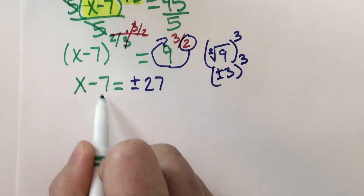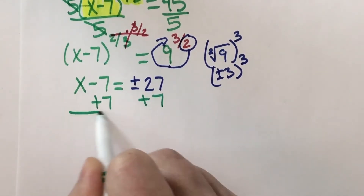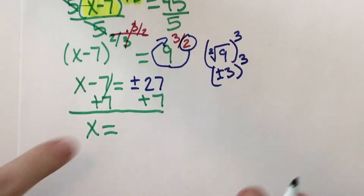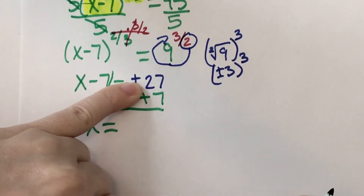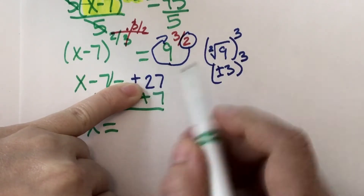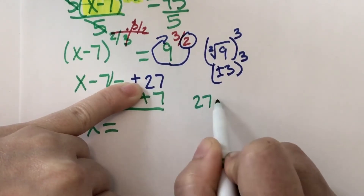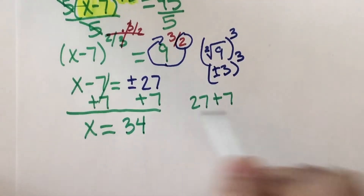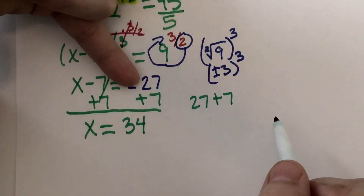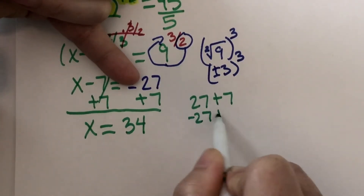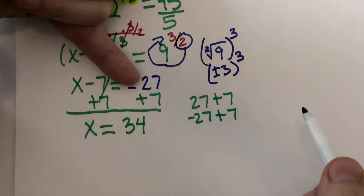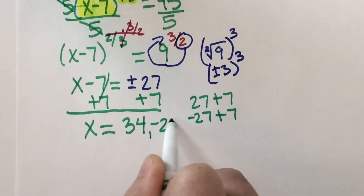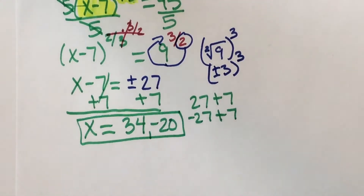To get x by itself, to get rid of subtraction of 7, I add 7 to both sides. Now, this is where some of you might be confused. This is giving you a positive 27 and asking you to add 7 to it — positive 27 plus 7 is 34. I also have a negative 27, and I'm asked to add 7 to negative 27 — that's negative 20. So those are my two answers: 34 and negative 20.